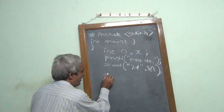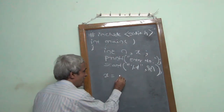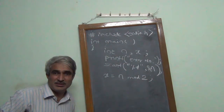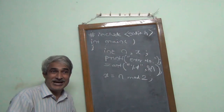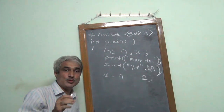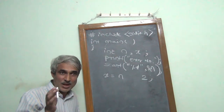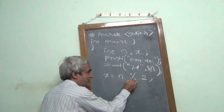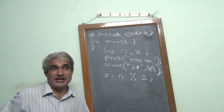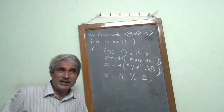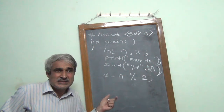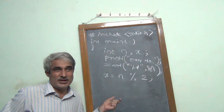Now I perform X equal to N mod 2. In C programming language, the mod operation is performed using the percentage operator. So the syntax is: X = N % 2, ending with a semicolon. There are many operators in C language with specific rules about their use — we will see those later.